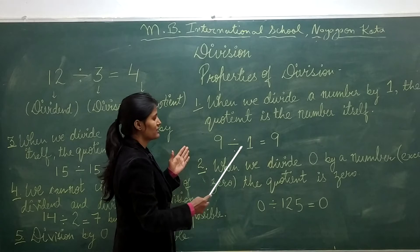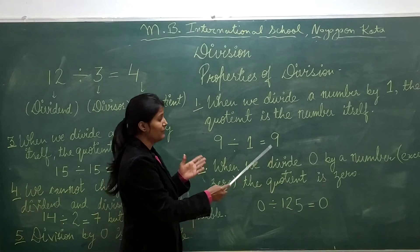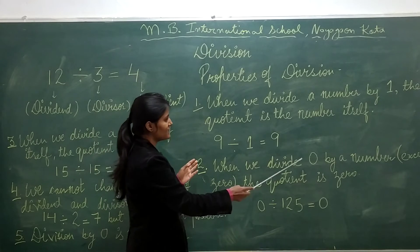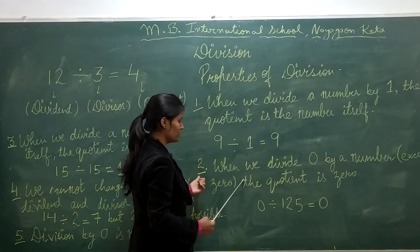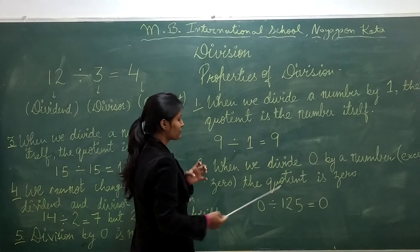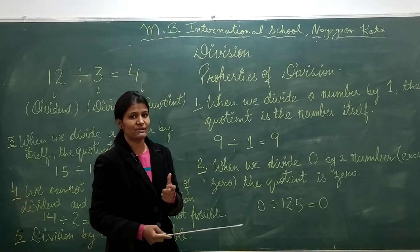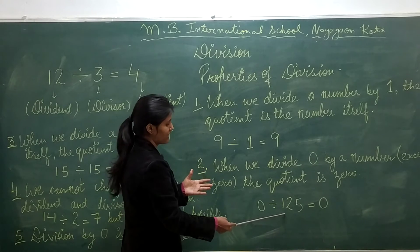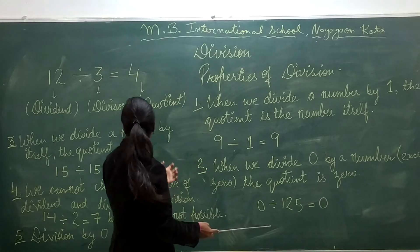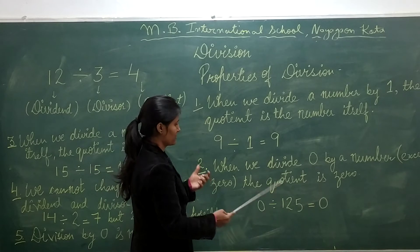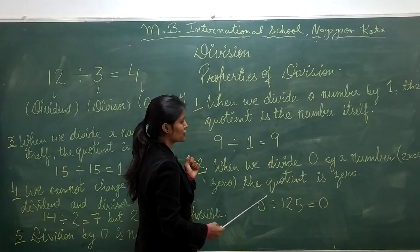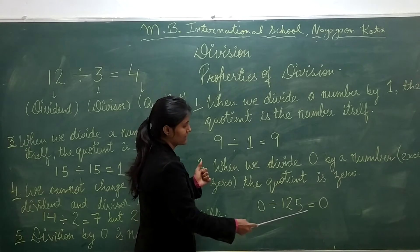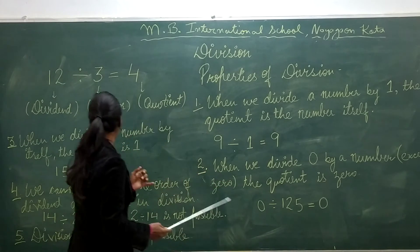Second, when we divide 0 by a number, the quotient is 0. For example, 0 divided by 125 equals 0. Here 0 is the dividend and 125 is the divisor.